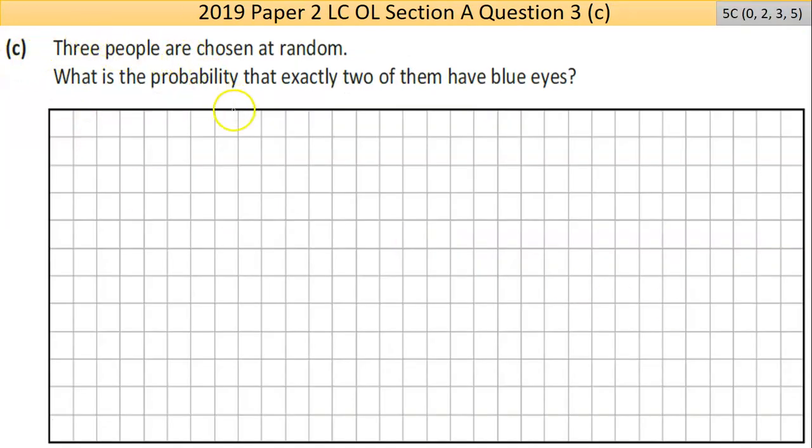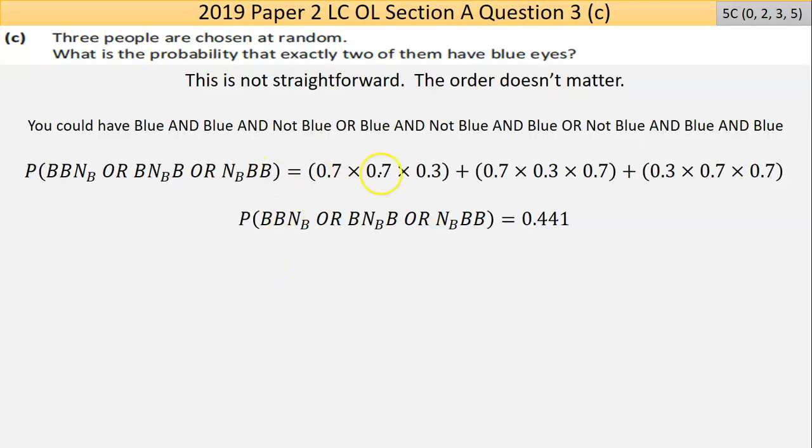Now, part C here, again, slightly more complex situation. Three people are chosen at random. Now it can be helpful to visualize that. You can go like, person, a person, and a person. And you get, so what's the probability that exactly two of them have blue eyes? And you think of the three people. The first person could be blue, they could be blue, or they could be not blue. Now, or they could be blue, not blue, blue. So we just go to the answer.